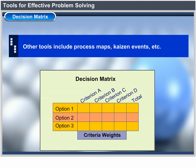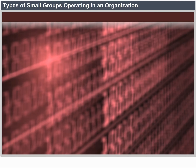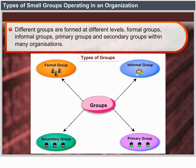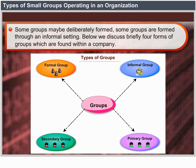Types of Small Groups Operating in an Organization. Within many organizations, different groups are formed at different levels: formal groups, informal groups, primary groups and secondary groups. Some groups are deliberately formed; some are formed through an informal setting. There are four forms of groups found within a company: formal group, informal group, secondary group and primary group.